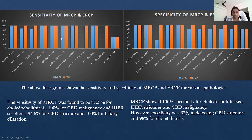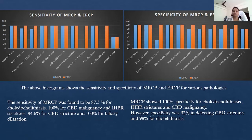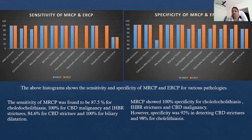The histogram shows the sensitivity and specificity comparison between MRCP and ERCP. The sensitivity of MRCP was 87.5% for choledocholithiasis, 100% for CBD malignancy and IHBR strictures, 84.6% for CBD strictures, and 100% for biliary duct dilatation. For specificity, MRCP was 100% specific for choledocholithiasis, IHBR strictures, and CBD malignancies. However, it was 92% specific in detecting CBD strictures and 98% in detecting cholelithiasis.